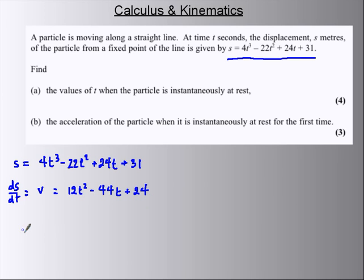And then differentiate again. dv/dt will give me acceleration, 24t - 44. And I've got my three formulas now.